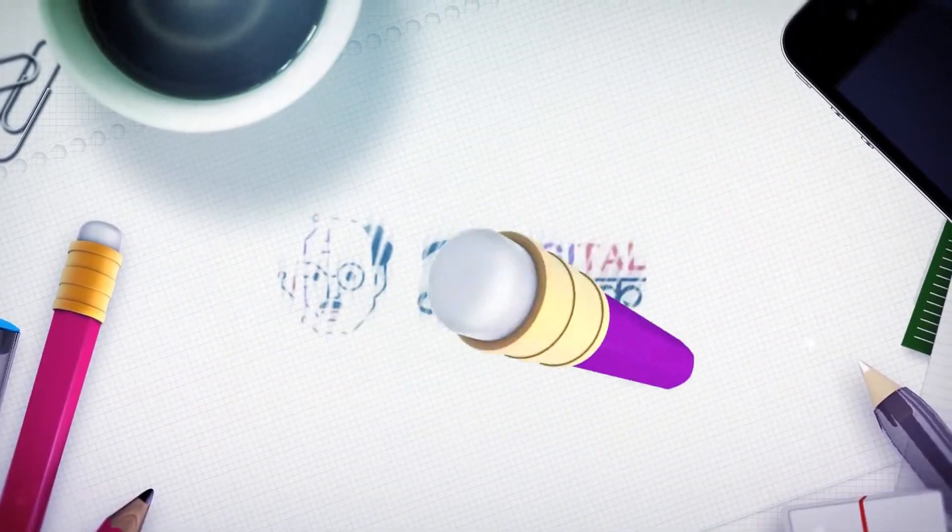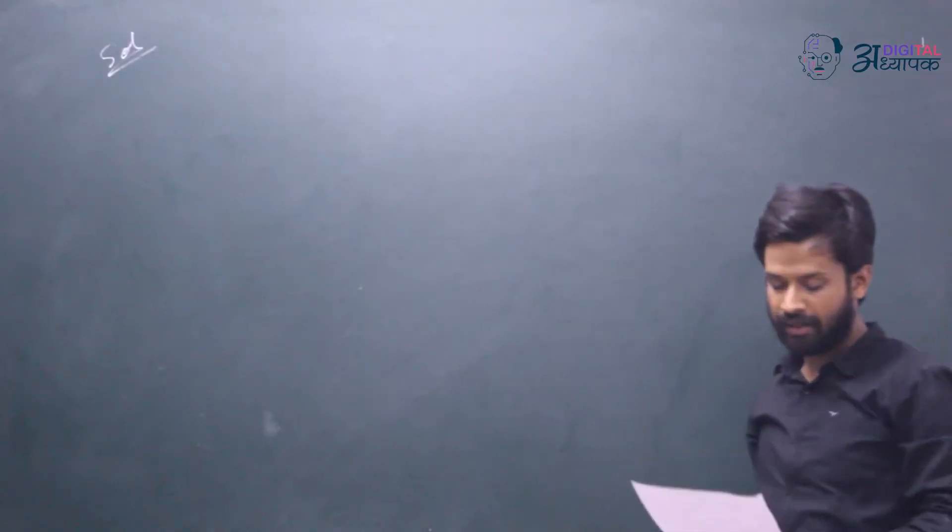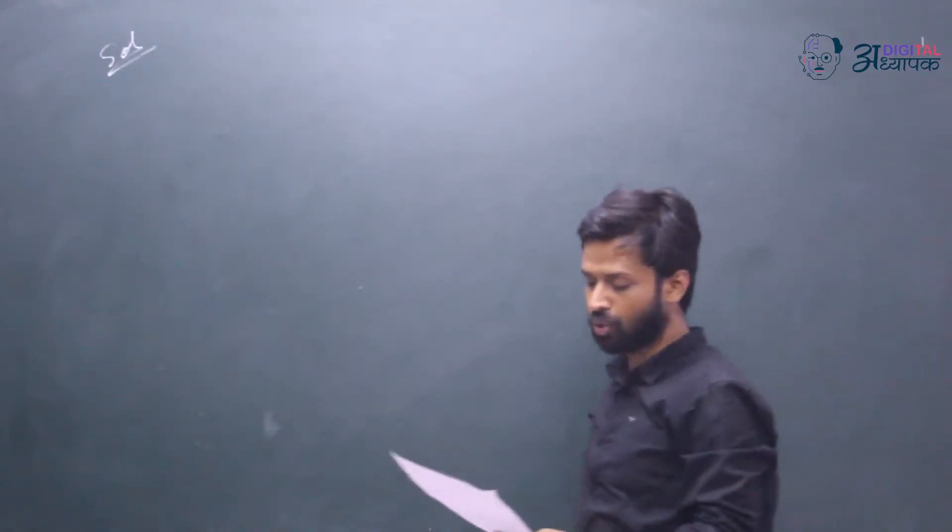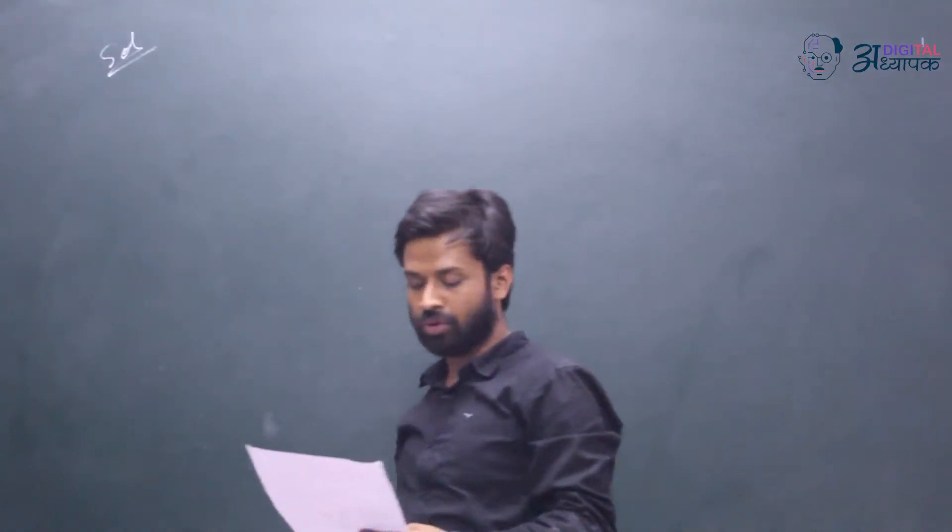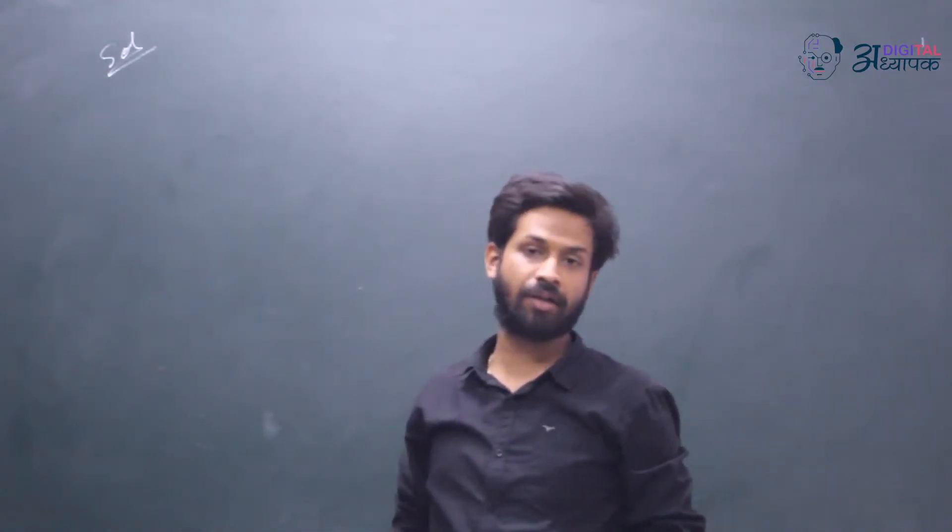Welcome to Digital Adhyapak. Our question is: the electric field in the region is given as E is equal to 2i cap plus 3j cap, and we have to find out the force on a 3 coulomb charge placed in this electric field.